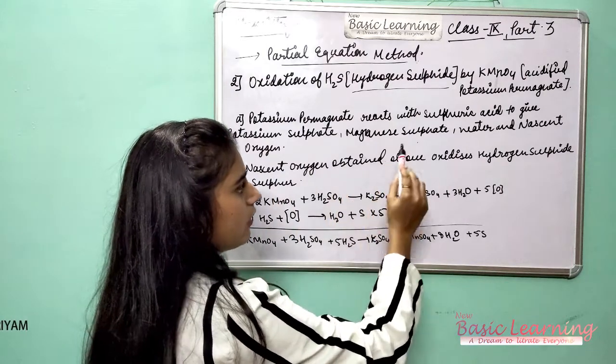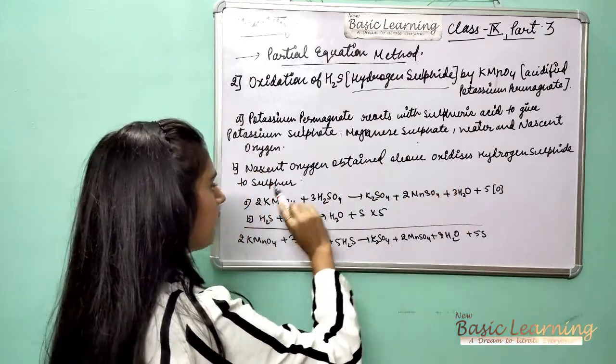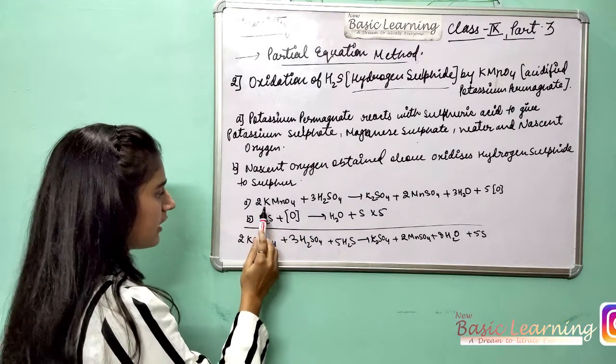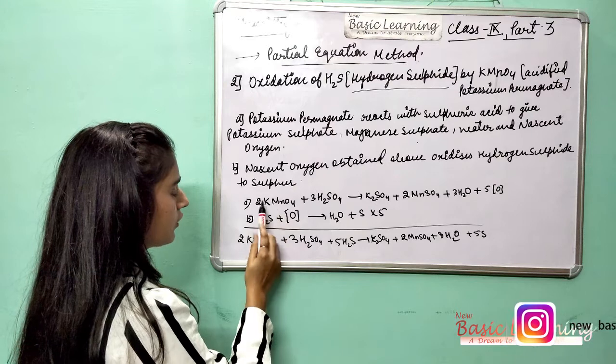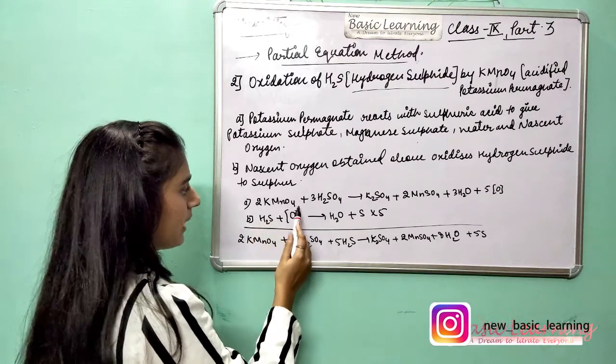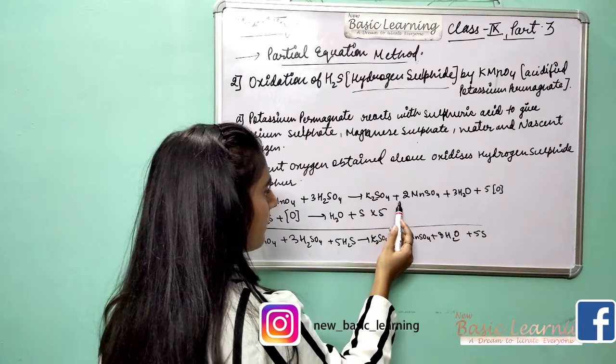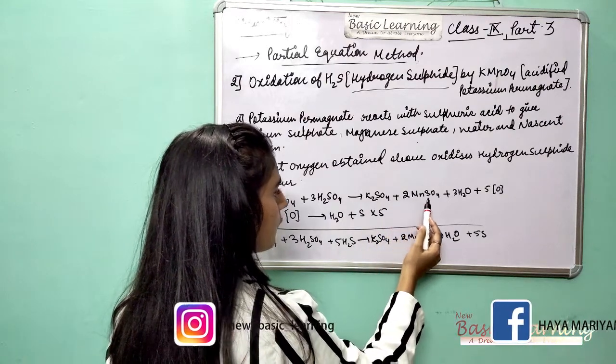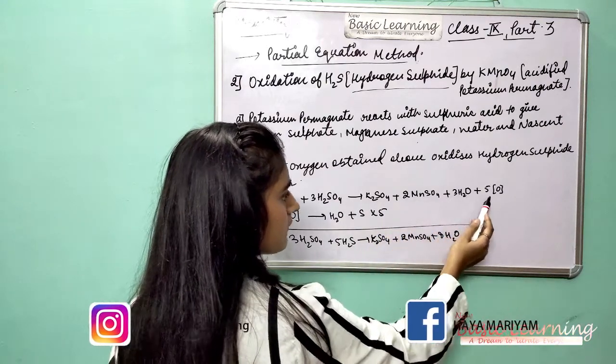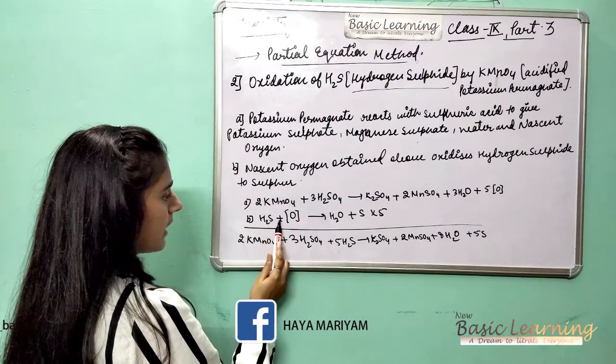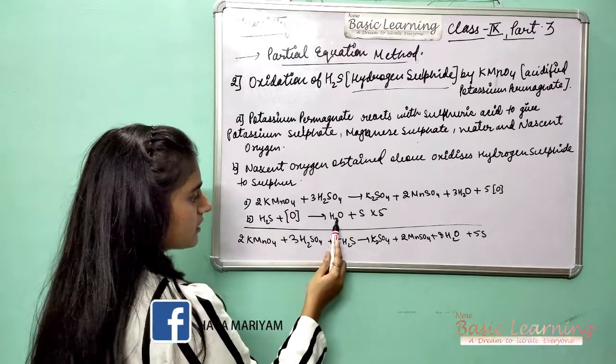Now we will write the chemical equation. 2KMnO4 plus 3H2SO4 gives K2SO4 plus 2MnSO4 plus 3H2O plus 5 nascent oxygen. Then in the second part, H2S plus nascent oxygen gives H2O plus S, that is sulfur, into 5.